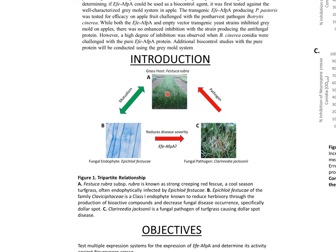Our lab works with a tripartite relationship involving a grass host, its fungal endophyte, and a fungal pathogen of the grass. Our grass host is Festuca rubra, which is a cool-season turf grass often endophytically infected with the endophyte Epichloe festucae, which provides both physiological benefits and resistance to fungal diseases. The fungal disease in question is Clarireadia jacksonii, which causes dollar spot, and we believe that the endophyte reduces disease severity potentially through our EFE-AFPA protein.